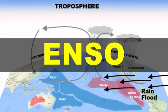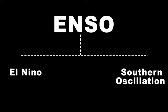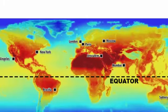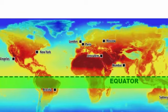In this video, we are going to learn about ENSO. If you break it down, EN stands for El Niño and SO stands for Southern Oscillation, because ENSO phenomena mostly occurs in the Southern Hemisphere, just right below the equator.